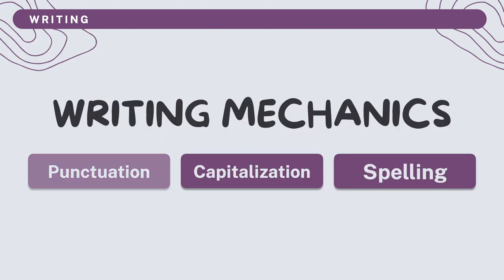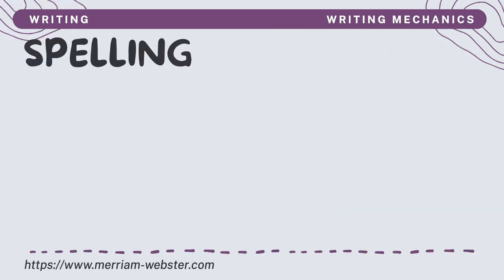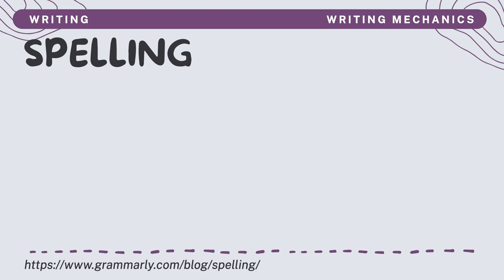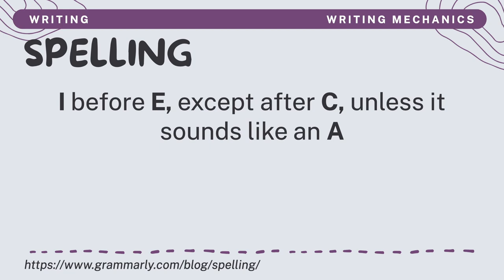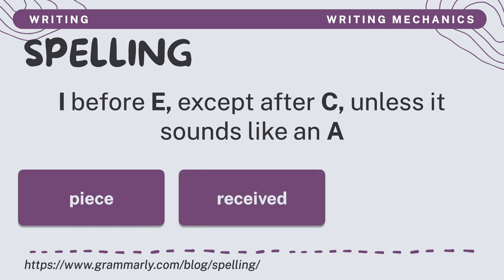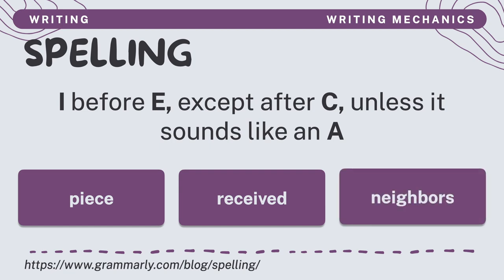Now that you have seen the rules of punctuation and capitalization, let's have a short recap on spelling writing mechanics. Spelling is the forming of words from letters according to accepted usage. In American English, I comes before E except after C, unless it sounds like an A. For example, in 'peace,' I comes before E, but in 'received,' since the letter before is C, E comes first. But in the word 'neighbors,' EI sounds like A, so E comes first. There are many exceptions to this rule, so maybe it's better to think of it as a guideline, but it can be helpful with words like the ones we have seen.